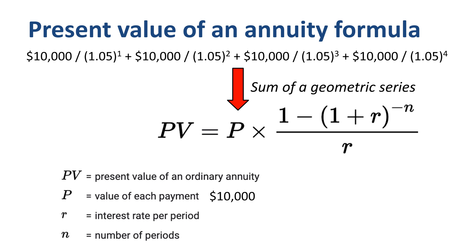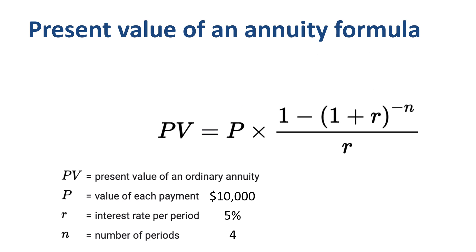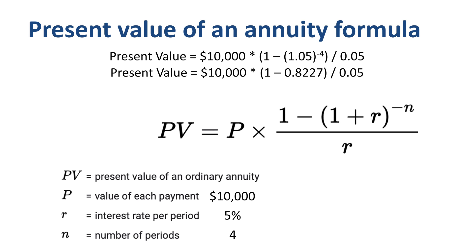In our example, the value of each payment is $10,000, the interest rate 5% per year, and number of periods 4 years. Plug those into the present value of an annuity formula, and this is what that looks like. 1.05 to the power minus 4 equals 0.8227. Complete the next steps of the calculation, and you will get to the present value of the annuity of $35,460, which is the same amount we had before in the step-by-step method.